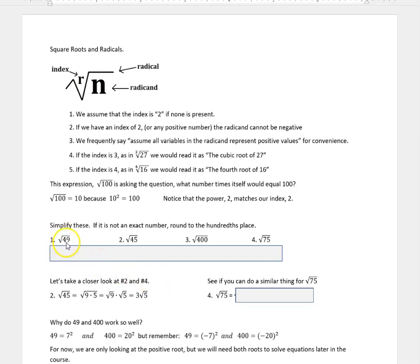The square root of 49, square root of 45, square root of 400, and the square root of 75. So pause if you don't want to see these already. The square root of 49 is 7 because 7 times 7 is 49. The square root of 45 is not an exact number. This number 45 is not a perfect square. That would round to 6.71 if you were asked to round to the hundredths place. Square root of 400 is 20, and the square root of 75 is 8.66.